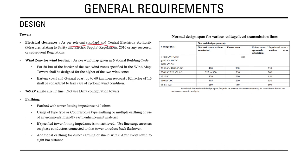Tower design electrical clearances must comply with the CEA Safety of Electrical Supply Regulations 2010 or any subsequent revision. For wind loading, wind zones are as per the wind map. For towers located within 50 km of the boundary between two wind zones, the tower shall be designed for the higher of the two wind zones.